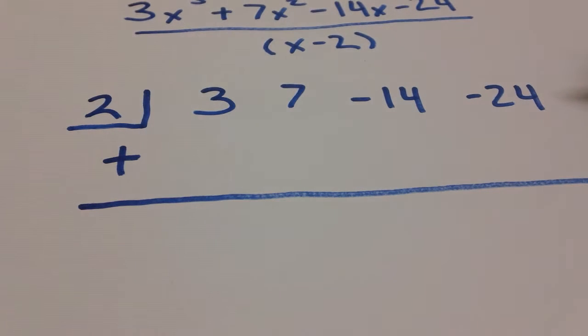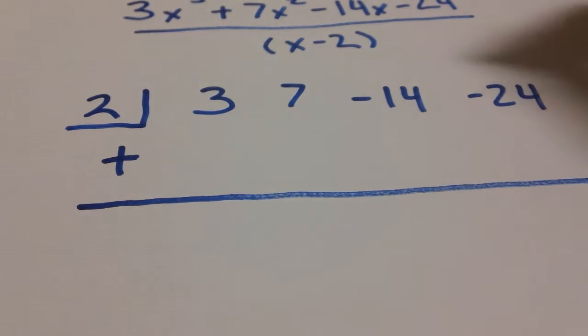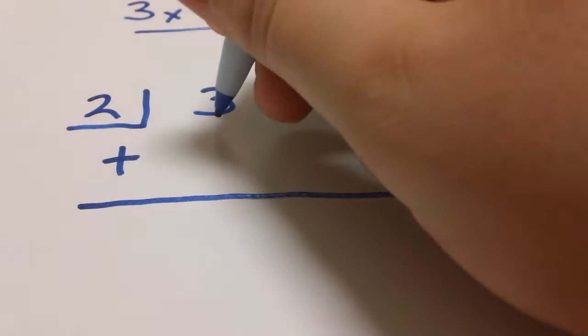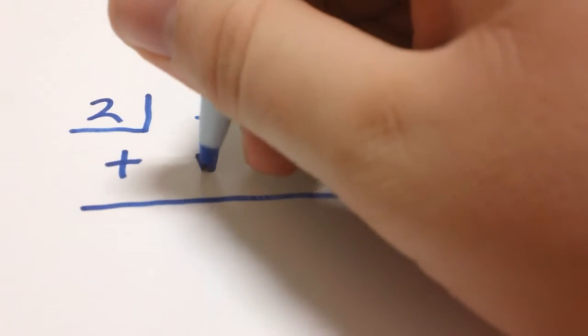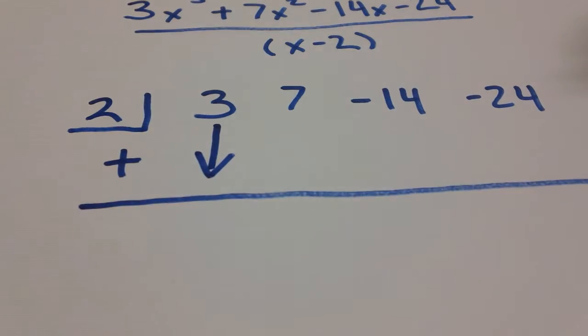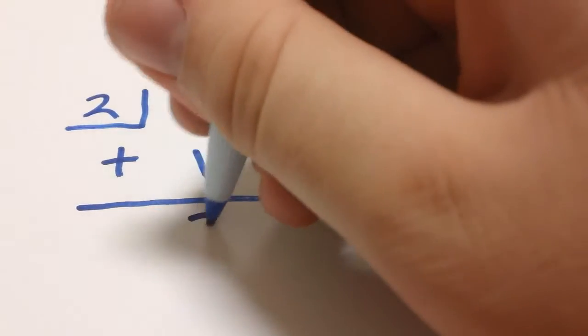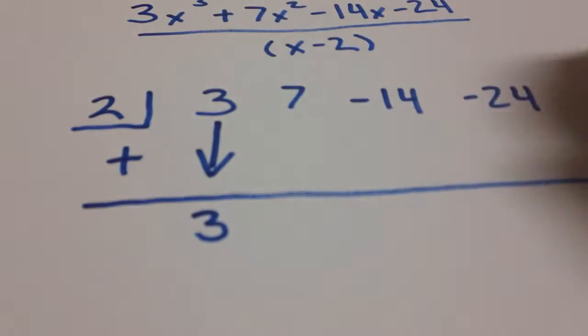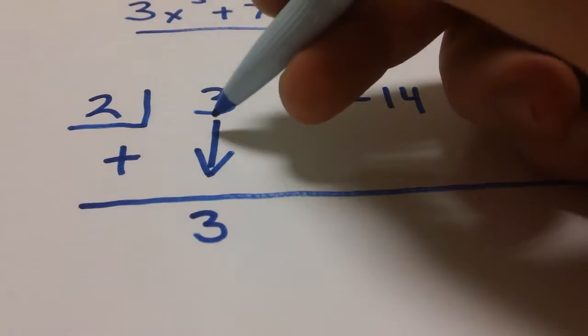Now once you have this done, we're going to go ahead and start this process. Now it's easier just to see this process done than to explain it, so I'm going to talk about it as we go through it. We begin by taking this first coefficient, this first number, the three in this case, and dropping it straight below this line. Below this line is where we're going to get our answer to the problem.